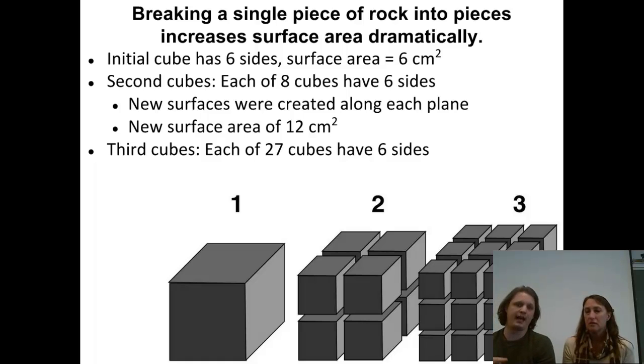If we take a look at image number two, we can see that we've now broken up this one piece into eight different pieces. And now we actually have more of the surface exposed for chemical weathering to act on it. If we were to count up the numbers of faces, we can either do it as a centimeter on a side, or a quarter of a centimeter for the smaller blocks.